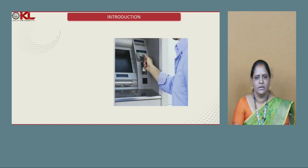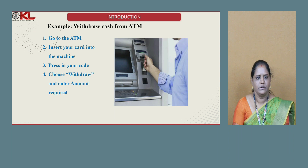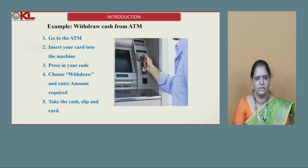Let us see withdrawing an amount from an ATM. To do this task, we follow some steps: go to the ATM, insert your card into the machine, enter your PIN code, choose withdraw and enter the amount required, then take the cash, slip, and card. These steps we follow in order to withdraw an amount from an ATM machine are called an algorithm.